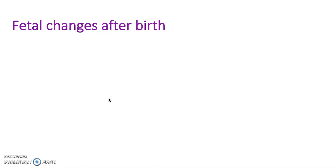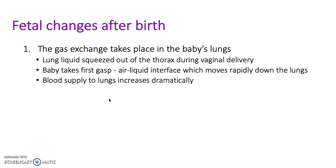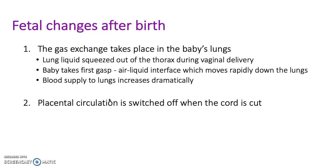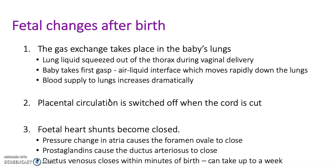After birth, fetal changes occur. Gas exchange now takes place in the baby's lungs — lung liquid is squeezed out of the thorax during vaginal delivery and the baby takes its first gasp, creating an air-liquid interface that moves rapidly down the lungs while blood supply to the lungs increases dramatically. The placental circulation is switched off as the cord is cut. The fetal shunts become closed: the foramen ovale closes due to pressure changes in the atria, prostaglandins cause the ductus arteriosus to close, and the ductus venosus closes within minutes of birth, though it can take up to a week.